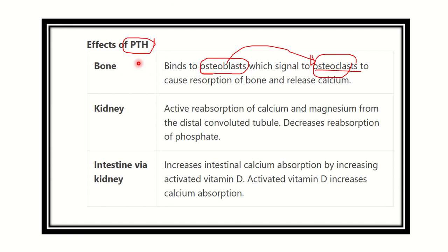The second pathway is the kidney. This is very important: parathyroid hormone acts on the kidney and increases the calcium level by increasing the reabsorption of calcium in the kidney. This is the second way parathyroid hormone increases serum calcium level.